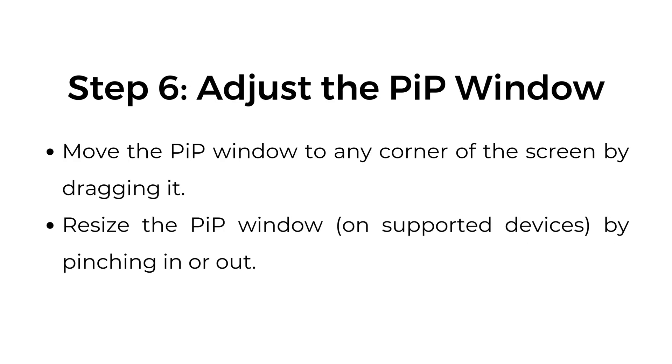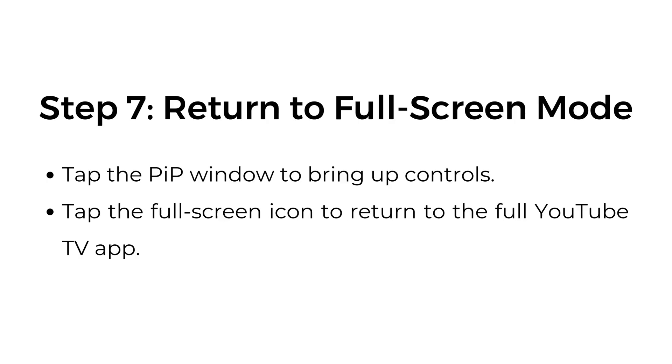Step number six: adjust the picture-in-picture window. Move the picture-in-picture window to any corner of the screen by dragging it. Resize the PIP window by pinching in or out.